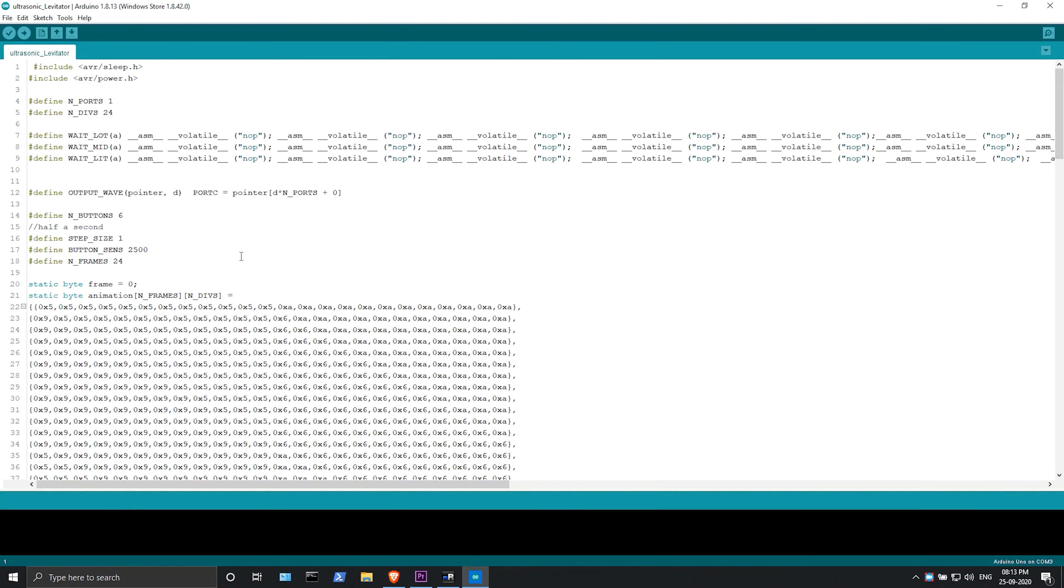Now let's talk about the ultrasonic levitator code. The first two lines include the AVR sleep and the AVR power libraries in the Arduino UNO as you can see. Then I defined the end port and the DVI port, end port as 1 and the DVI port as 24.